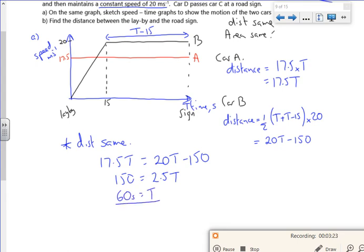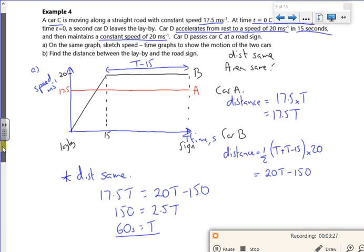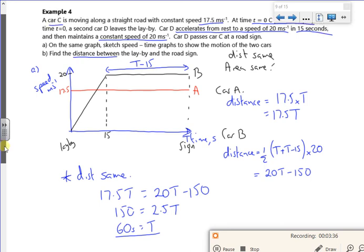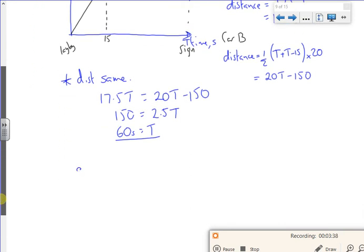Now let's just have a double check. So without really reading the question, what I have got is the time it takes. So now I want the distance between the lay-by and the road sign. So I've found the time, so my distance is just going to be 17.5 times 60, which will be 1050 meters.